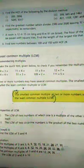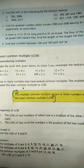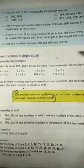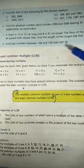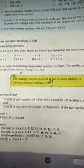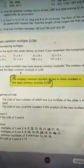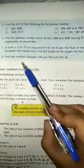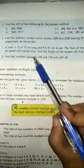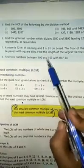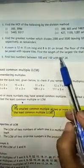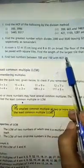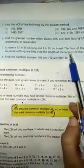Bismillahirrahmanirrahim. Welcome back students. Now we will solve question number eight of exercise 4A. This is the last question given on page number 53. It states: find two numbers between 100 and 150 with HCF 24.